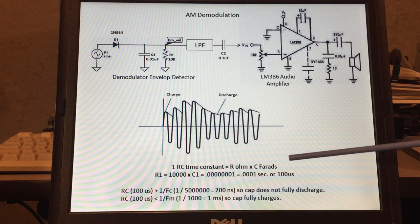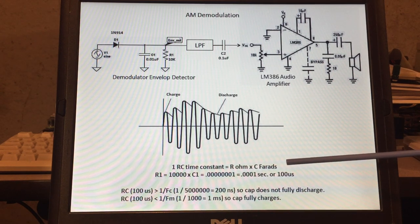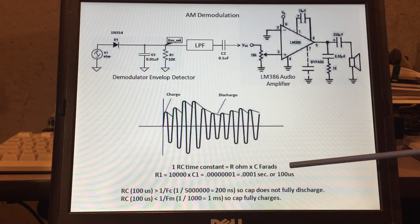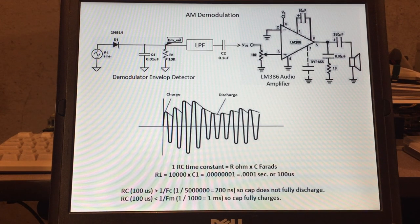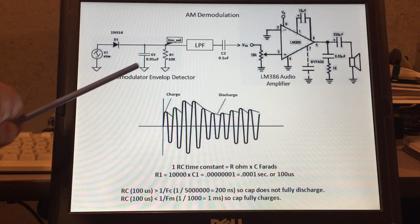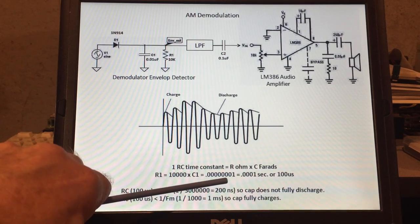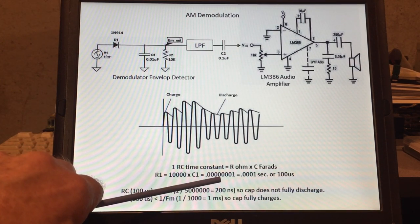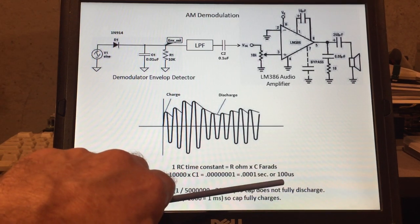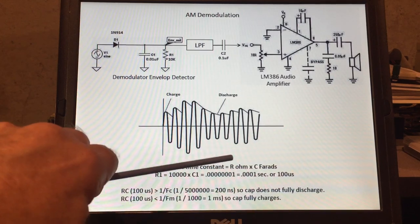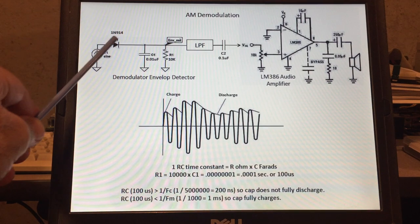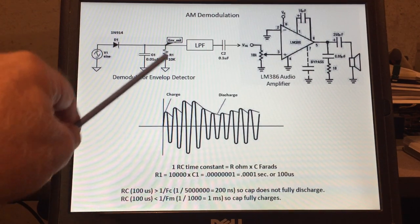So what is one time constant equal? Basically it's the resistance in ohms times the capacitance in farads. So in our case R1 is 10k so we have 10,000 and then C1 is a 0.01 microfarad, so that's what it is in farads. And when we multiply that out we get 0.0001 seconds or 100 microseconds. So that's what our RC time constant is when this capacitor initially charges and then discharges through the resistor.